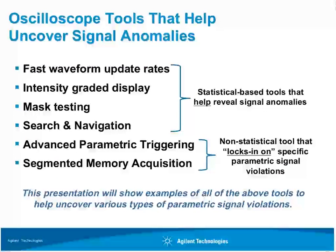Many of today's digital storage oscilloscopes have advanced capabilities that can help uncover signal anomalies. Fast waveform update rates, intensity-graded displays, mask testing, as well as search and navigation, are all tools that can help reveal signal violations — but all these tools are statistical-based. For instance, with a waveform update rate of up to 1 million waveforms per second, Agilent's 3000X series scope can catch events that other scopes miss. But what if an anomalous event occurs just every billion trigger events? Then we need advanced parametric triggering, a non-statistical oscilloscope tool that can lock onto parametric signal violations. If you can specify a trigger condition that uniquely describes the signal characteristics, the scope's hardware effectively goes into babysit mode and waits for that event to occur.